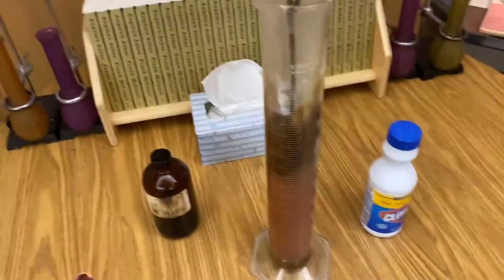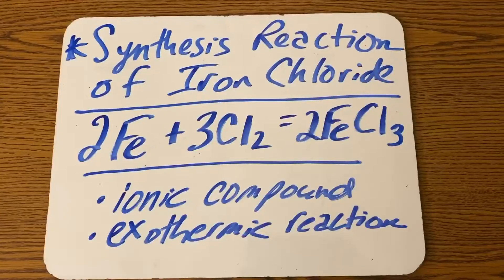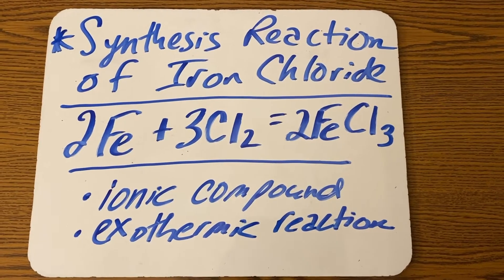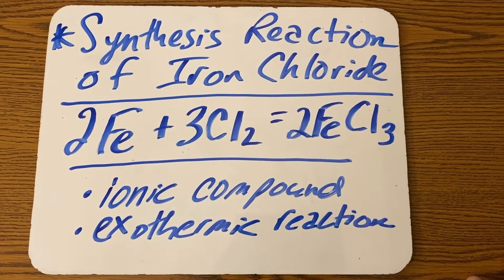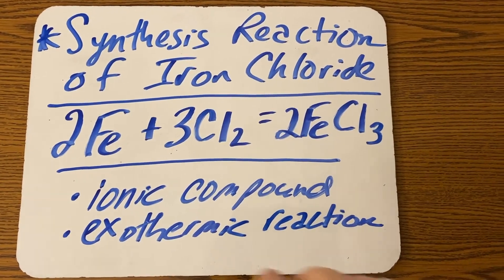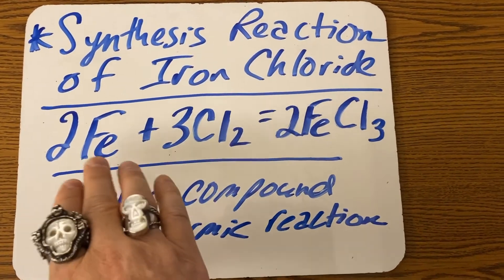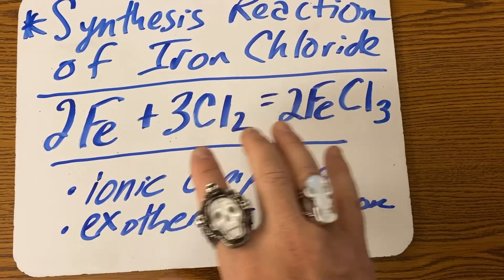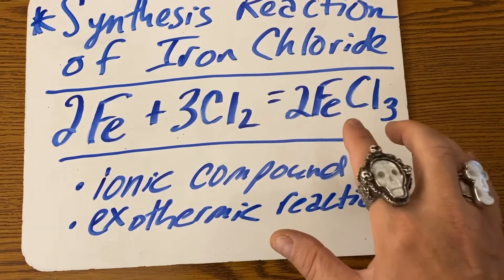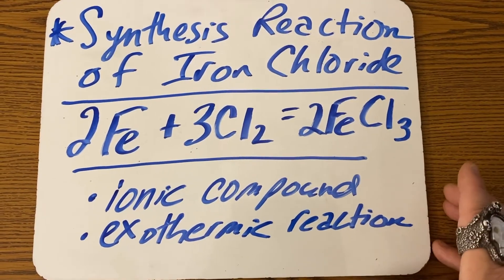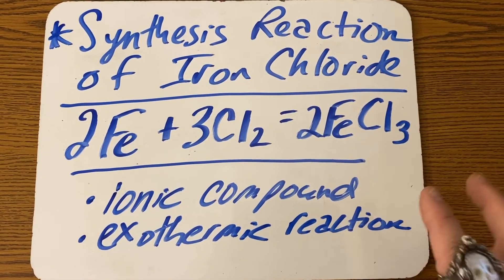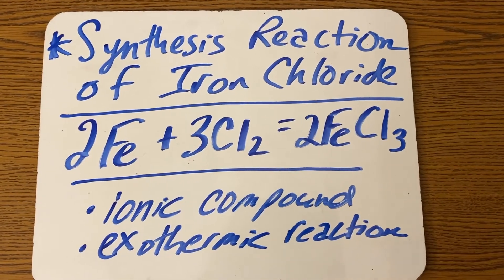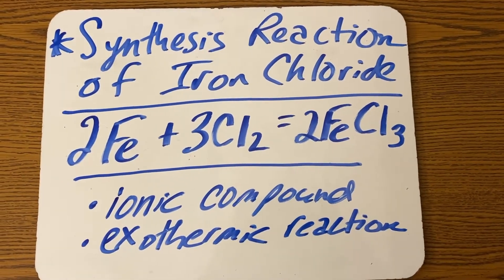Iron chloride. What's going on here is you've got a synthesis reaction that creates iron chloride, where iron combines with chlorine gas to create iron chloride. This is an ionic compound, very exothermic — releases a lot of heat right away.